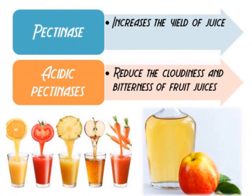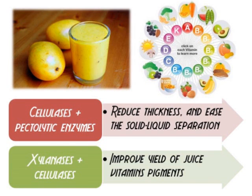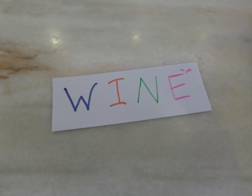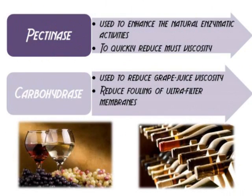Pectinase increases the yield of fruit juice, whereas acidic pectinase reduces the cloudiness and bitterness of fruit juices. The combination of cellulase and pectolytic enzymes reduces the thickness of juice and eases solid-liquid separation. The yield of juice, vitamins, and pigments can be improved by mixing xylanase and cellulase. In winemaking, pectinase is commonly used to enhance natural enzymatic activities and to quickly reduce mash viscosity.